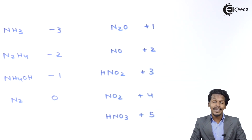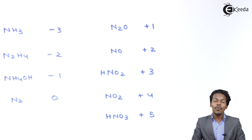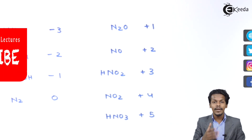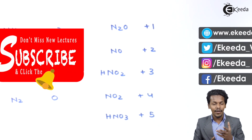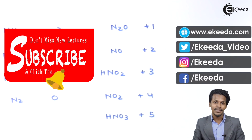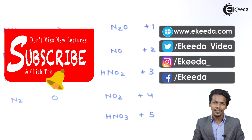So this was the oxidation state of Group 15 elements, ranging from minus 3 to plus 5. Thank you for watching this video. I hope you understood clearly, and I will see you next time. Don't forget to subscribe.